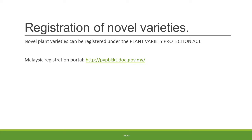Registration of novel varieties of plants can be done under the Plant Variety Protection Act. In Malaysia, the plant registration portal is indicated on the link provided. Each country will have its own specific portal for the registration of novel varieties of mutant plants.